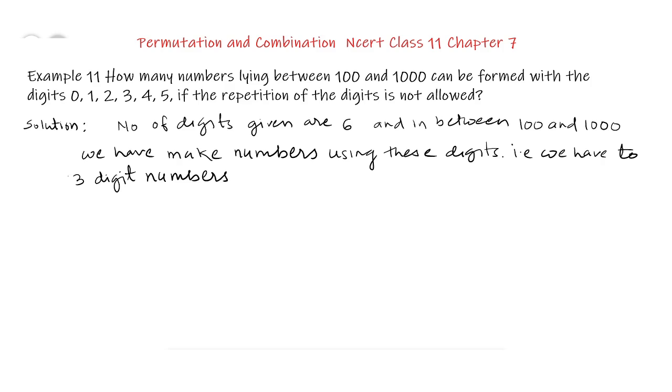But we know that using these numbers, all those digits will be included which start at 100th place with 0. But those numbers starting with 0 will not be of 3 digits but will be of 2 digits. So what we will have to do is subtract those digits.